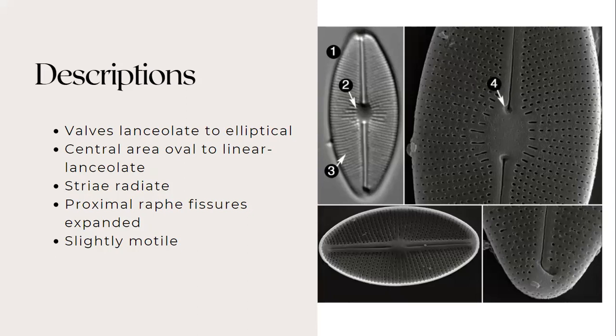The central area is oval in large valves, becoming linear lanceolate in smaller valves. These striae are punctate and radiate. And in the central valve, several striae are short and do not extend from the central area to the valve margin. The proximal raphe is fully formed with expanded central features and this species is slightly motile.